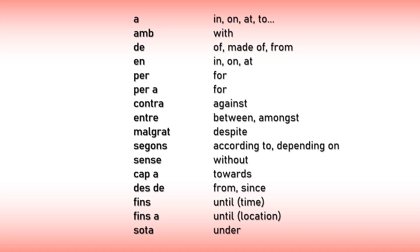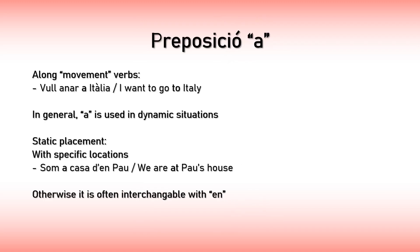Let's start with the preposition A, which is the one that has probably the biggest amount of translations. A is always used in dynamic situations in which you want to explain that you're going from a point A to a point B. So you use it along movement verbs. For example, 'I want to go to Italy' — 'to go' is a verb that implies movement. You can use the same example with driving somewhere or cycling and so on.